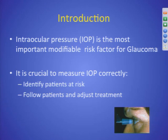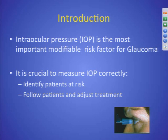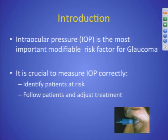As mentioned before, intraocular pressure — the pressure within the eye — is a very important factor in glaucoma, and it's really crucial to understand what the pressure is. First of all, we have to know it because this is the way in which we can identify patients at risk. The second reason is that we should know how to follow patients and how to treat them by knowing what their pressure is. So it's very important to get accurate measurements of the intraocular pressure.